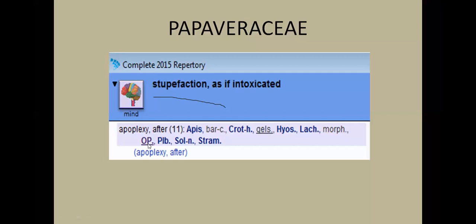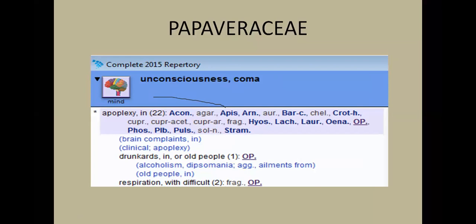Opium is very strong in the apoplexy coma rubric. There are also sub-rubrics: 'unconscious coma in apoplexy in old people or drunkards' — single remedy: Opium. And 'unconscious coma in apoplexy with difficult respiration' — two remedies, with Opium as the main fourth-grade remedy. From Materia Medica, Opium is well-known for comatose conditions, stupefaction, and unconsciousness.